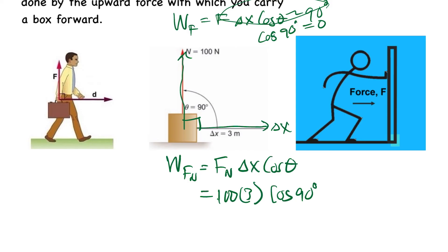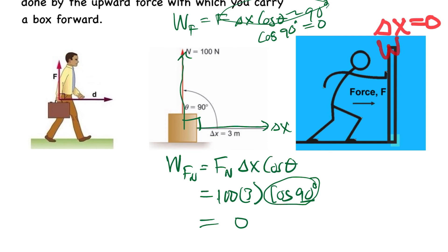Similarly, consider the normal force on a moving object: the normal force is 100 N, the displacement is 3 m, but the angle between them is 90 degrees. So W = 100 × 3 × cos 90 = 0. Also, if an object is not moving at all — like a person pushing against a wall that doesn't move — the displacement is zero, so the work done is zero. No displacement means no work.